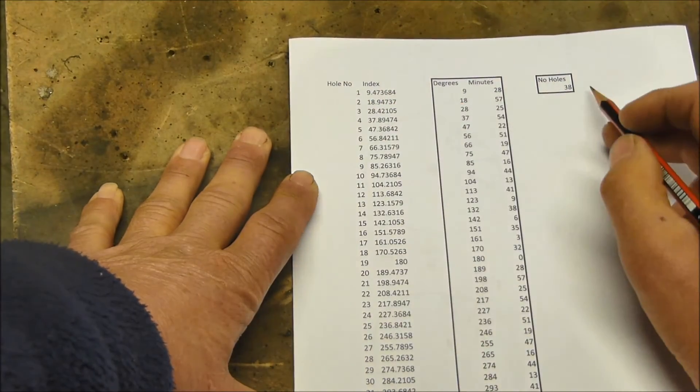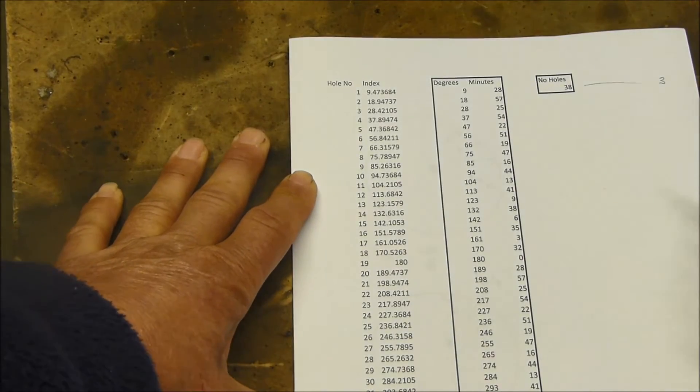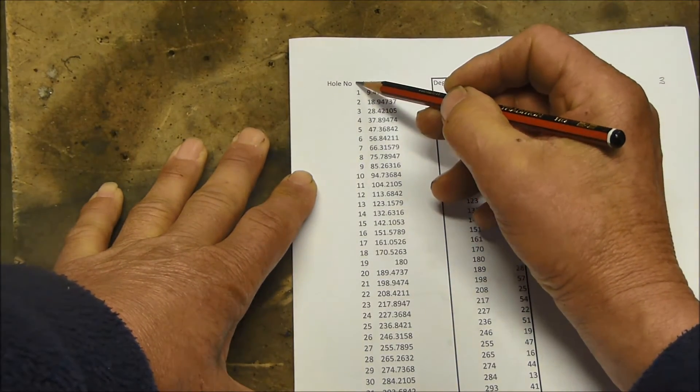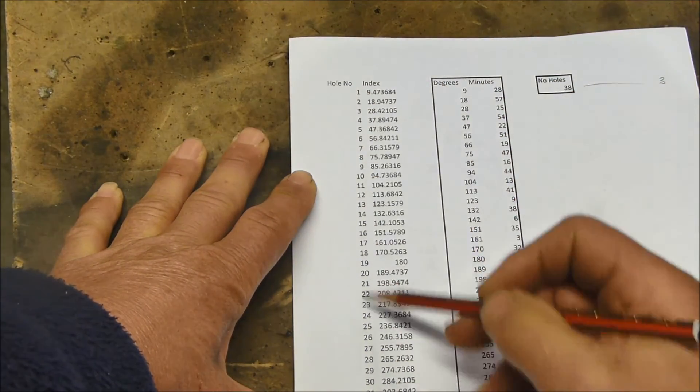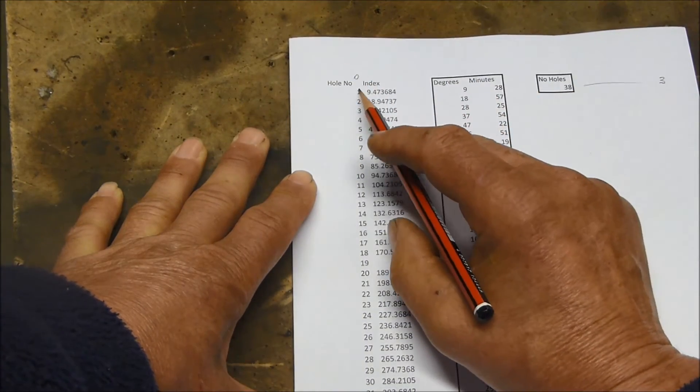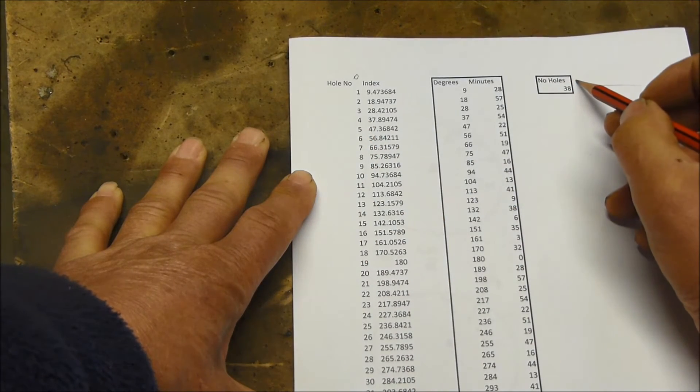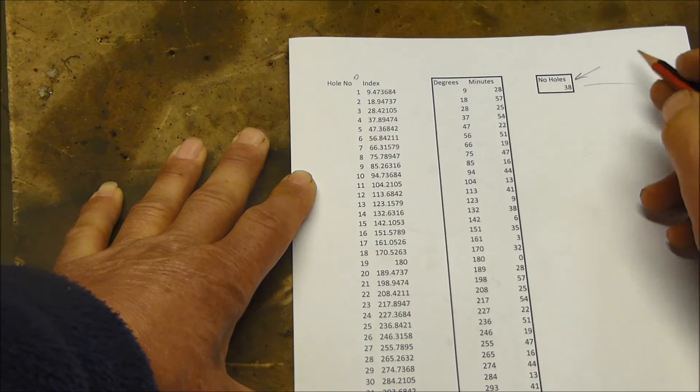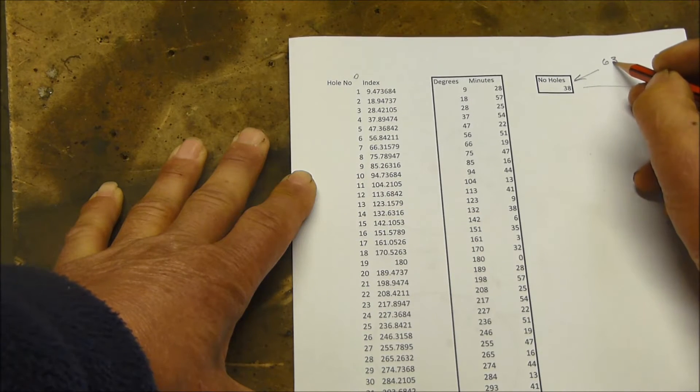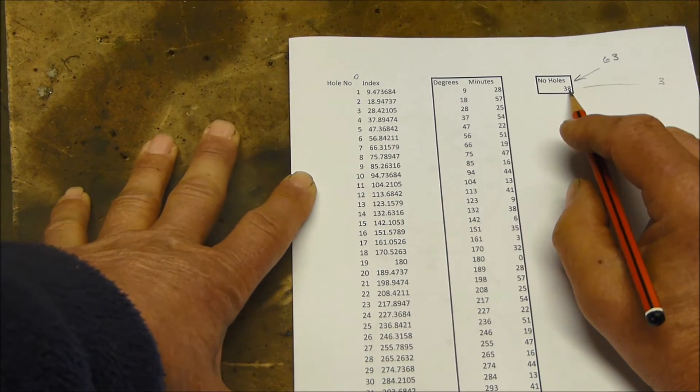So this first row of numbers here is in row 3 by the way. So this column here is the number of the hole we want to drill. So the first one always goes at 0, so this is hole 1, hole 2, hole 3, hole 4. In this cell here, which is cell G3, I've put the number of holes we want to drill, in this case 38.